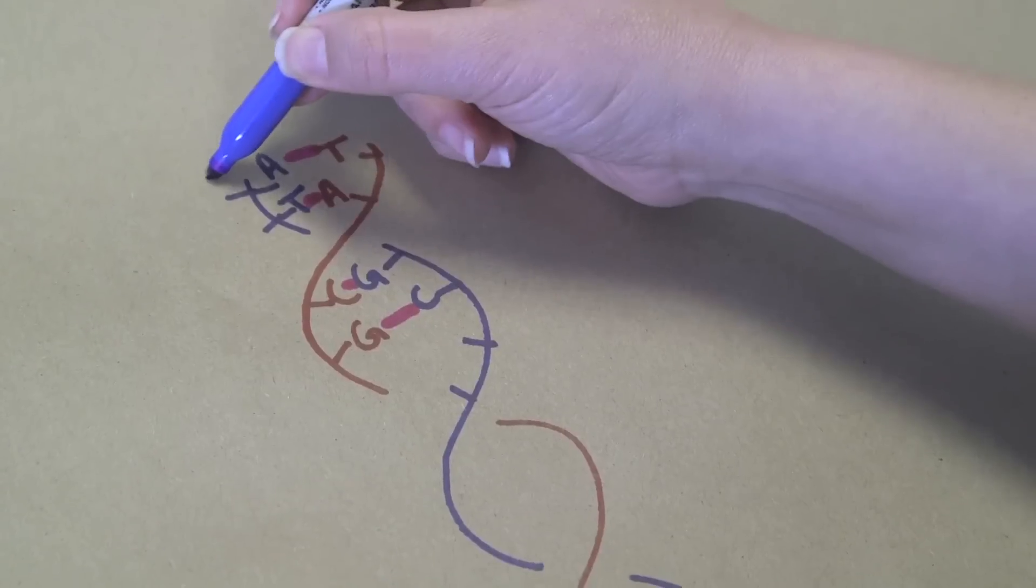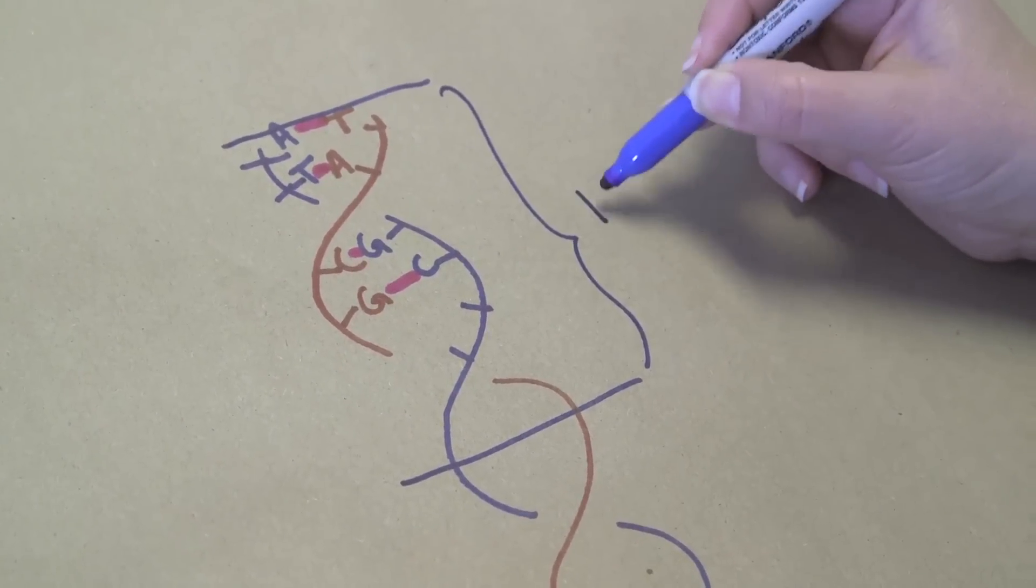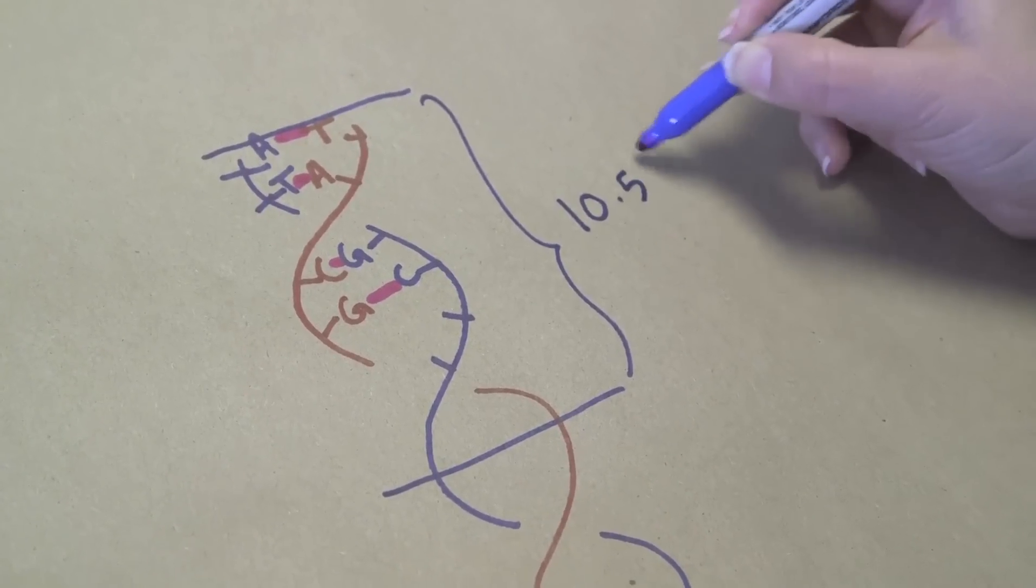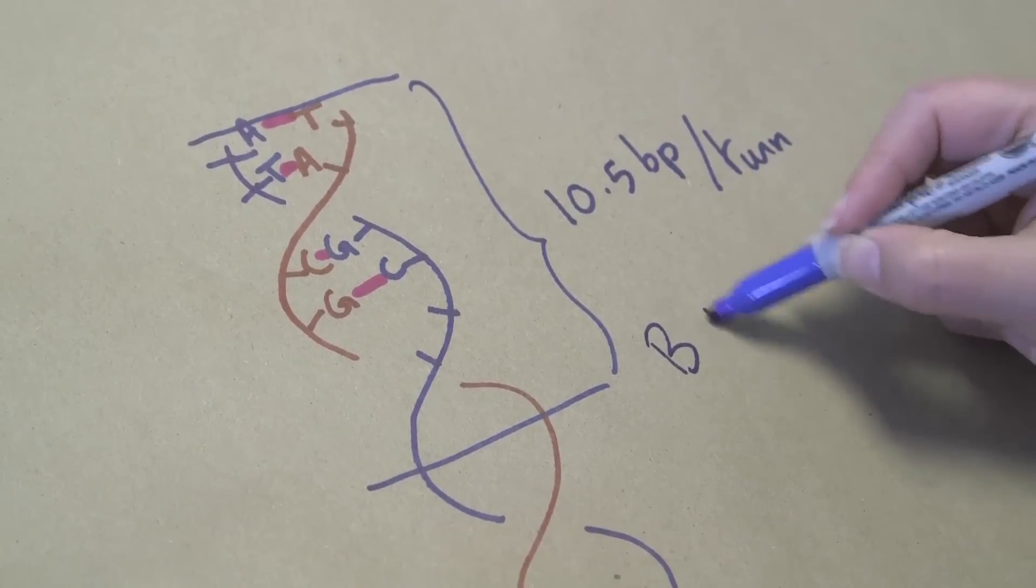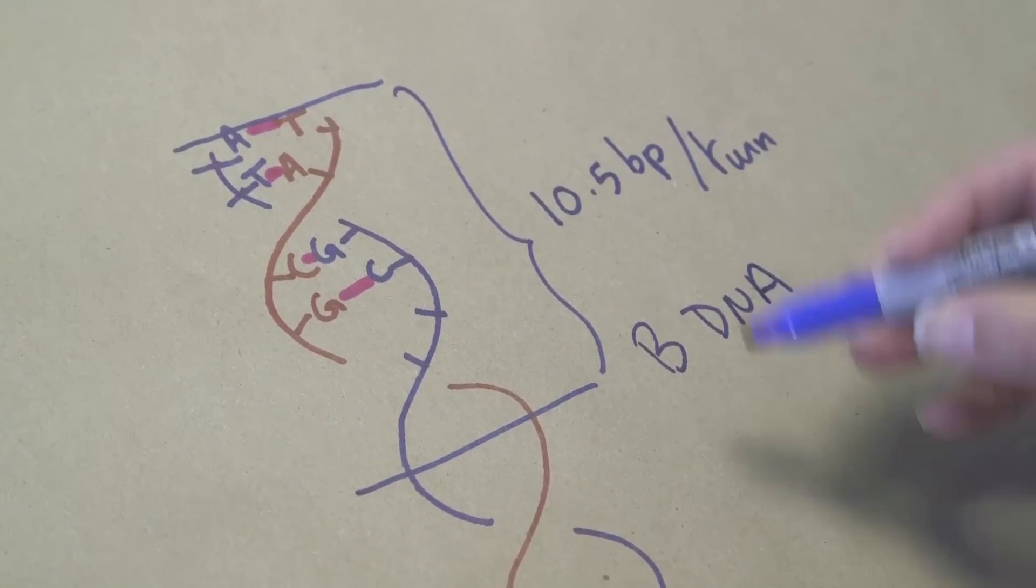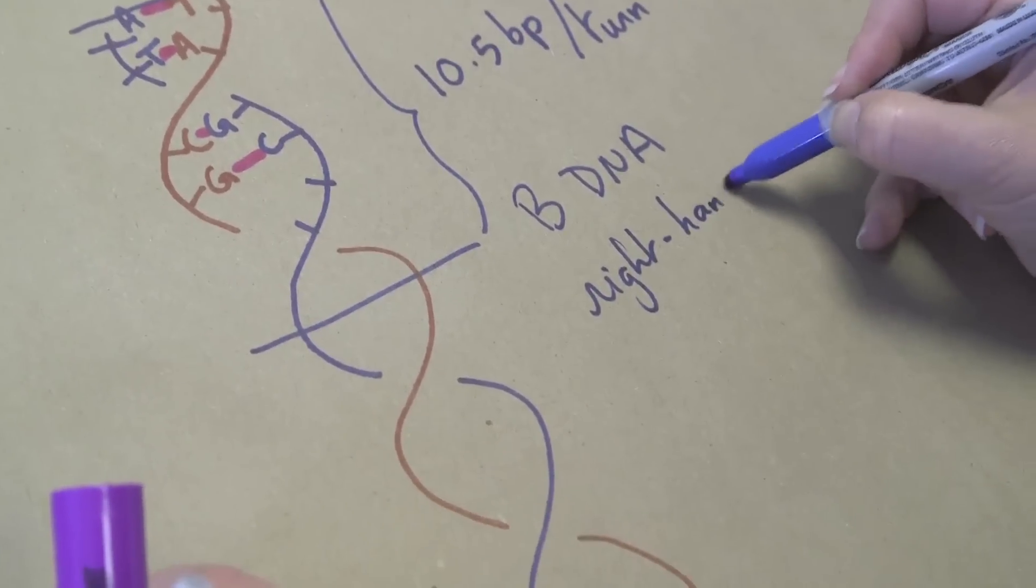For each turn of the helix, so this would be a full turn of the helix, you will expect to have 10.5 base pairs per turn in what we call B DNA. It's important to note that it is right-handed for the DNA that is in most organisms.